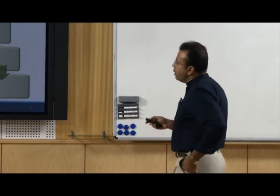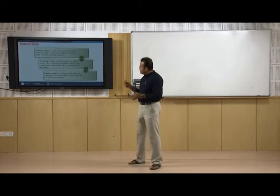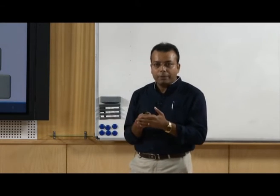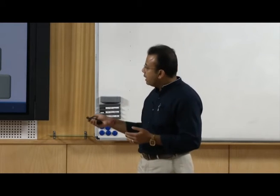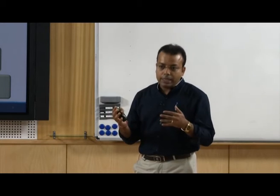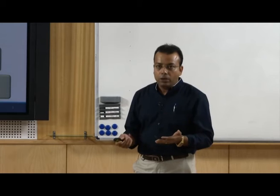The different stages of wear are: primary stage, secondary stage, and tertiary stage. The primary stage is when just the two samples are mating each other. The secondary stage is when two surfaces are in dynamic motion, or one is dynamic and one static — both are rubbing each other for a longer time. The tertiary stage, called the old edge, is where components are subject to rapid failure due to a high rate of aging — both materials have been in contact for a long time and failure can occur any time.